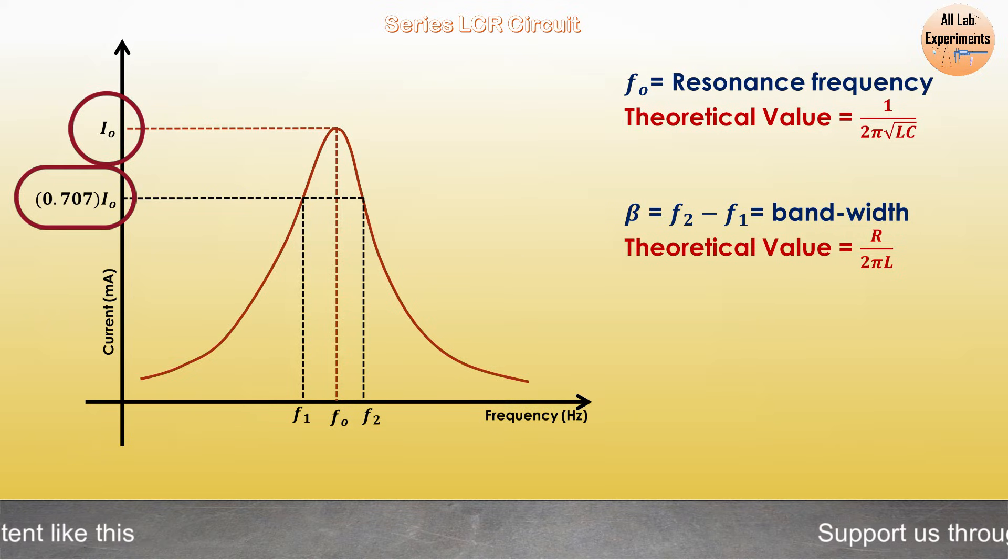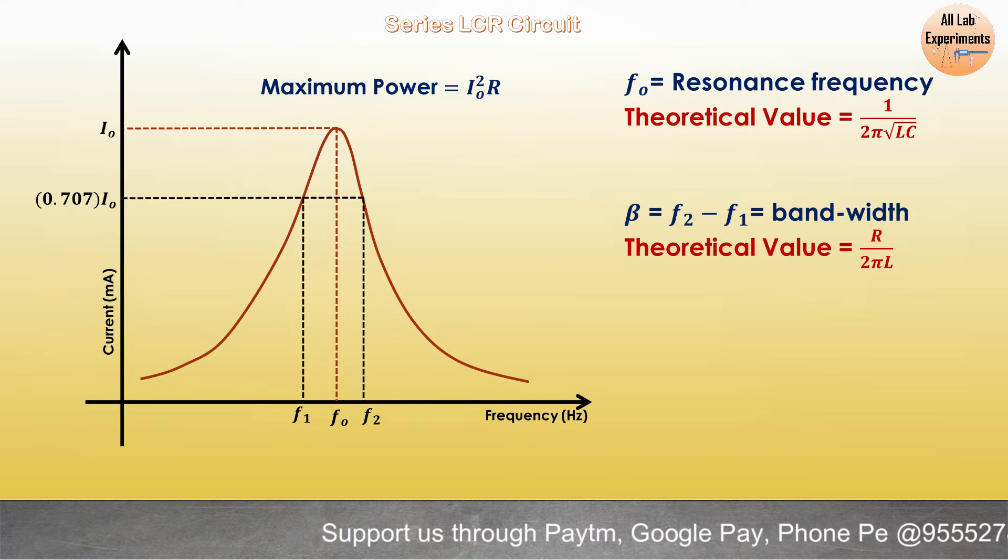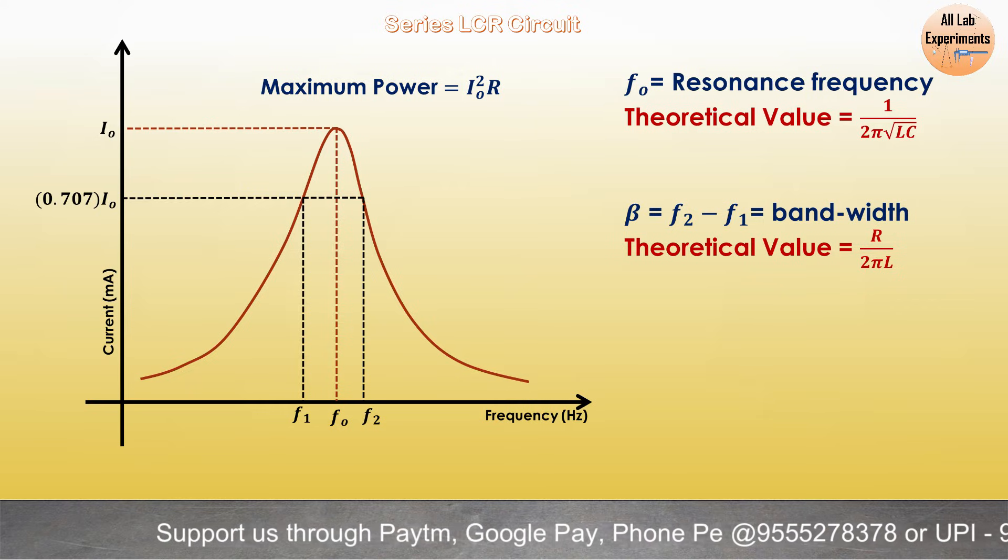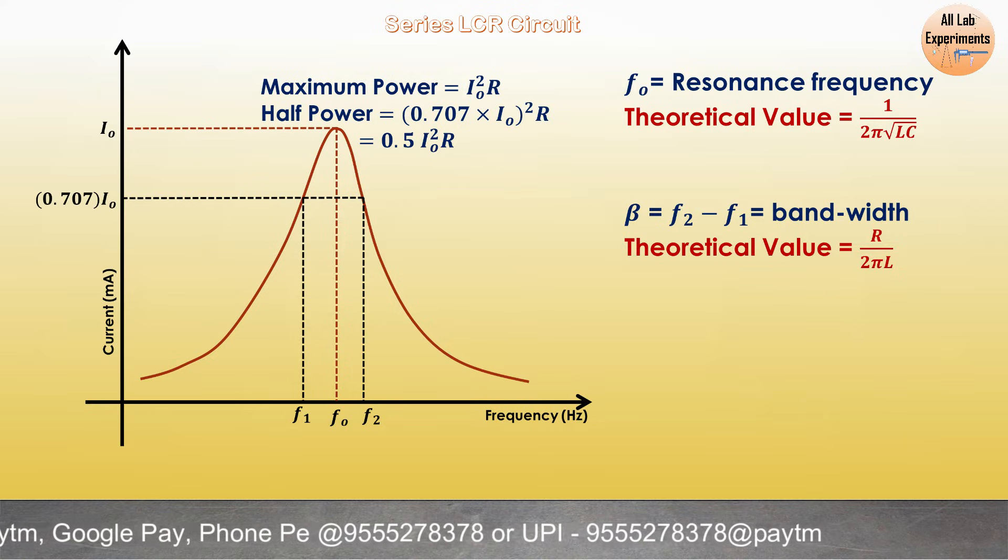The concept behind bandwidth is that the maximum power through the resistance R can be denoted by I₀² R. The bandwidth is when the power has become half. When we take 0.707 I₀, the total power becomes half, and at this place we define the bandwidth.